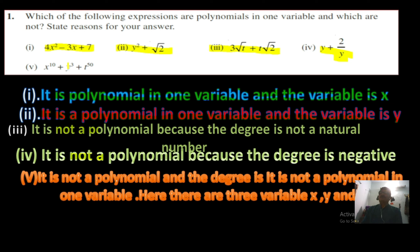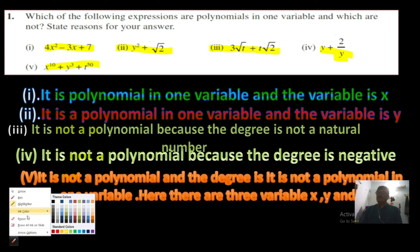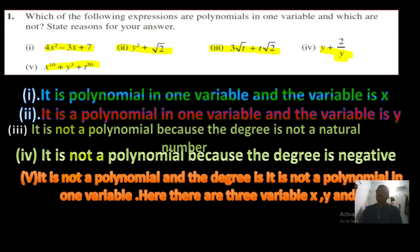The fourth expression is not a polynomial because the degree is negative. For the last one, please make a small correction — it is not simply 'not a polynomial'; the correct answer is it is not a polynomial in one variable, but it is a polynomial. It is not a polynomial in one variable because there are three variables: x, y, and t.